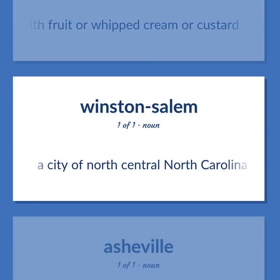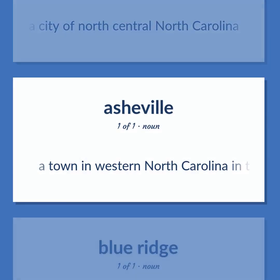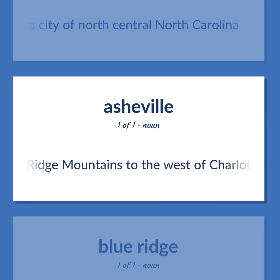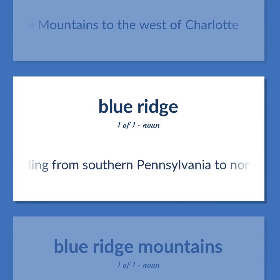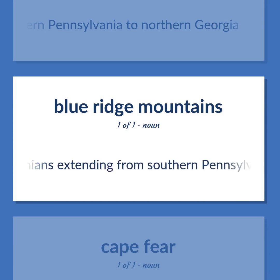A city of north-central North Carolina. A town in western North Carolina in the Blue Ridge Mountains to the west of Charlotte. A range of the Appalachians extending from southern Pennsylvania to northern Georgia.